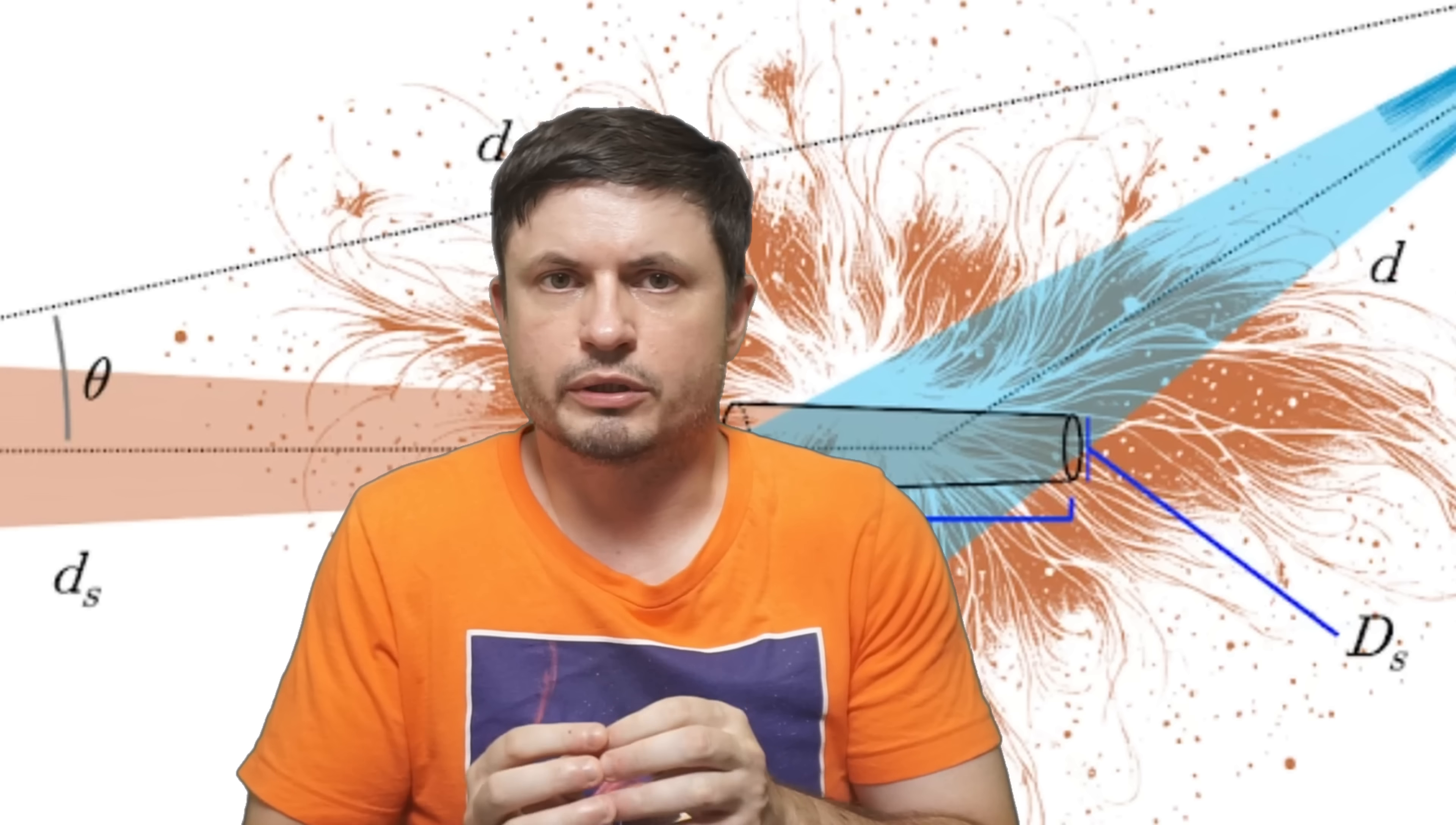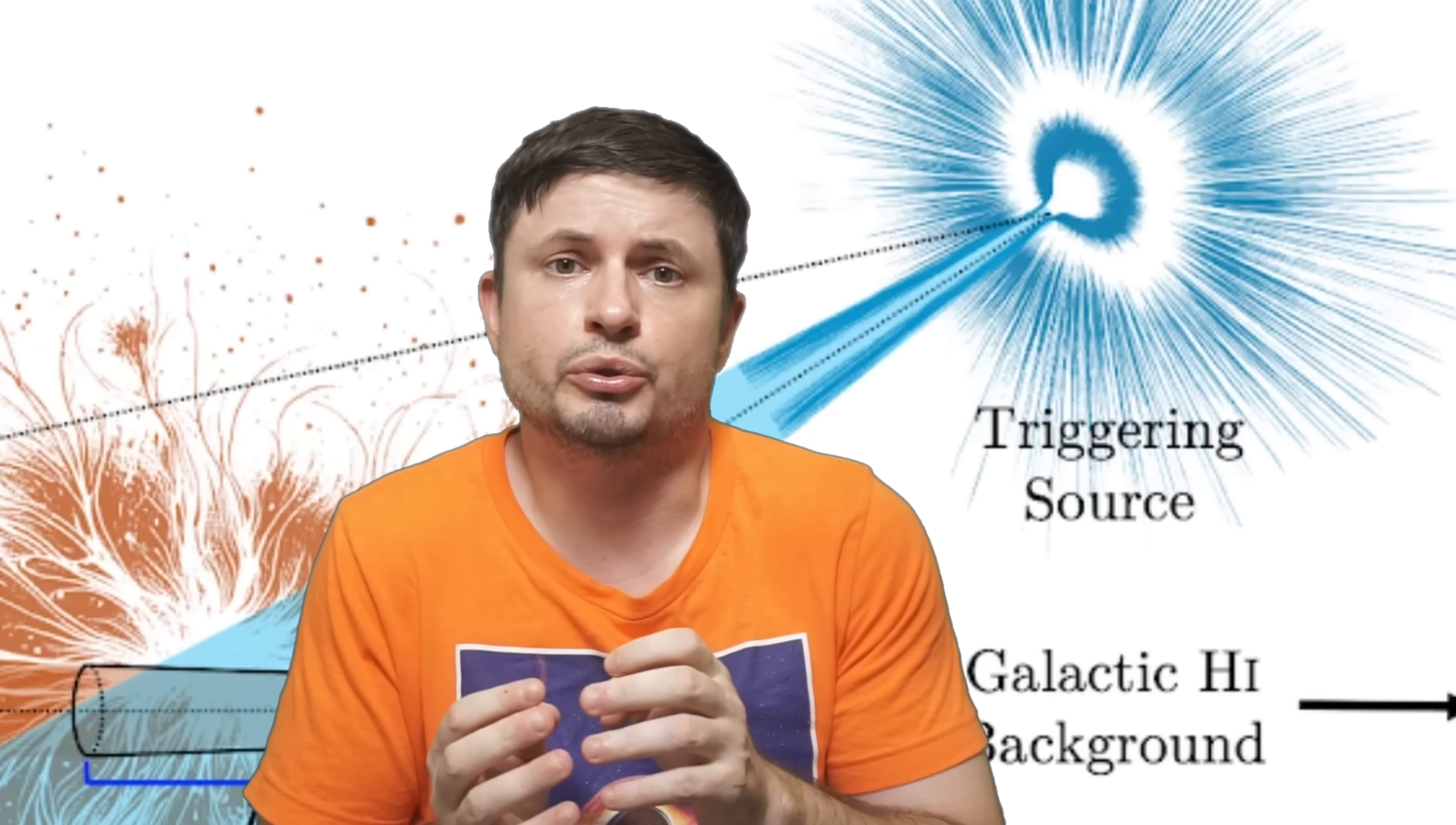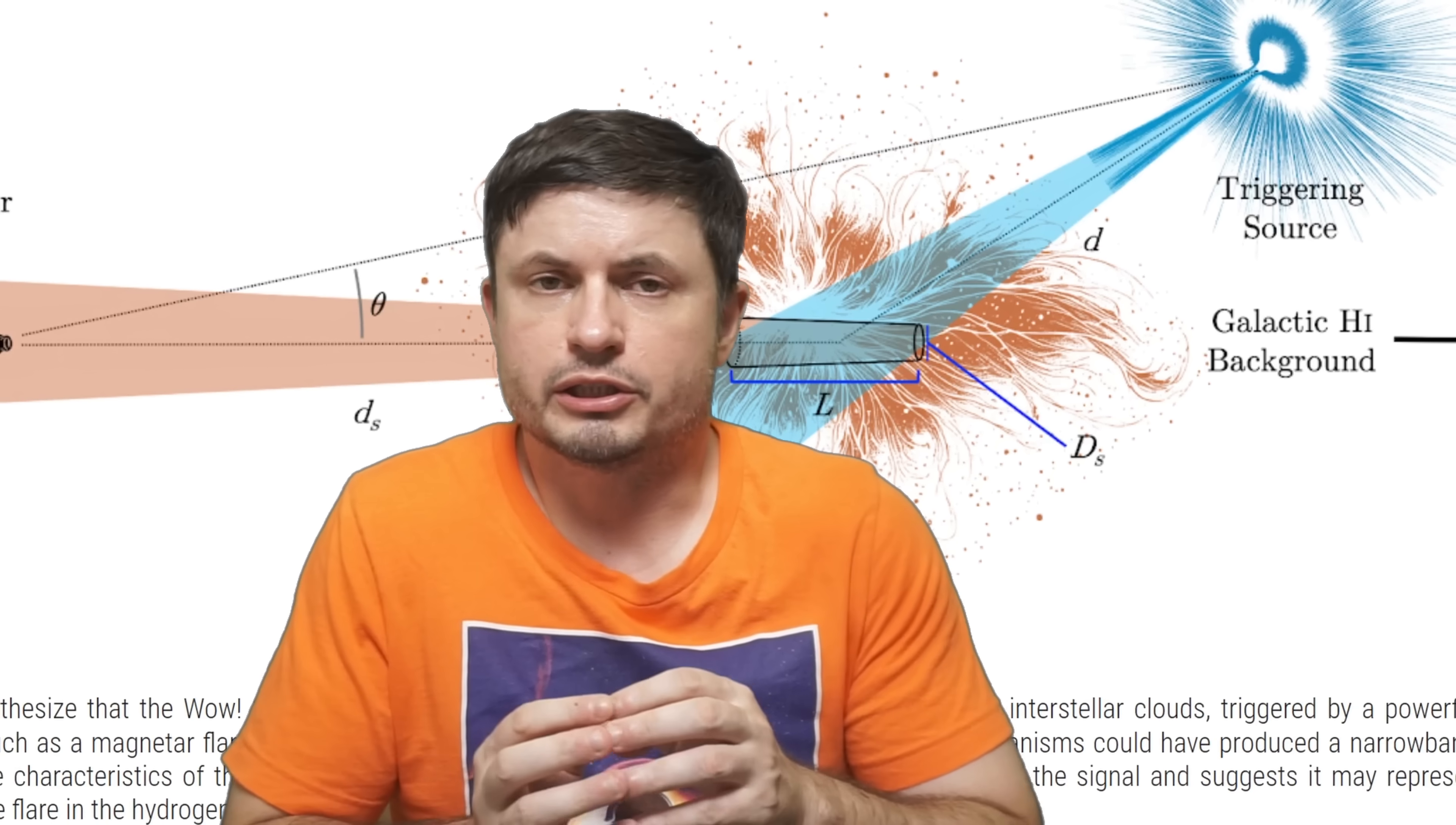Or as someone described it in a previous video that I made approximately a few months ago, this was basically a hydrogen cloud fart. But in this case, a hydrogen fart produced as a result of some kind of a powerful object, such as, for example, a magnetar, illuminating the source from a slightly different angle. You can compare this to a very powerful laser shooting at a cloud and making the cloud suddenly brighten up in certain frequencies. Because this was a hydrogen cloud, it produced what's known as a hydrogen line.